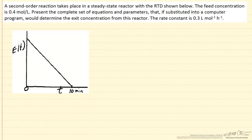In this problem we're looking at a second order reaction that takes place in a steady state reactor, and we're assuming for simplicity that it has a residence time distribution that's shown in this diagram, to make the calculations easy. The feed concentration into the reactor is 0.4 moles per liter, and the question is what's the conversion of this reactor.